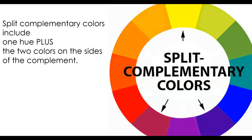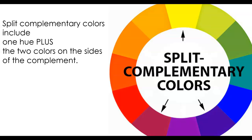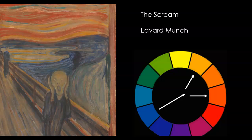Split complementary colors can be a lot more complicated. It's similar to the complementary color set except when we get to the opposite side, we split in half using the two colors on either side of the complement. So in this example we see yellow — the complement is violet — so we split in half and we use red-violet and blue-violet. Here's an example of a composition by Edvard Munch called The Scream. In this composition, Edvard Munch uses blue, and the complement of blue is orange, so we're looking at yellow-orange and red-orange.